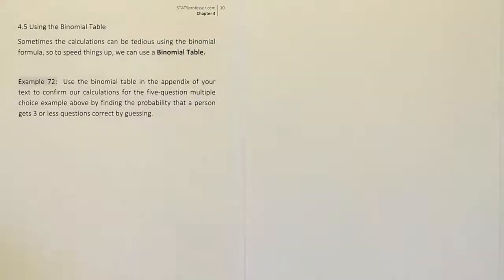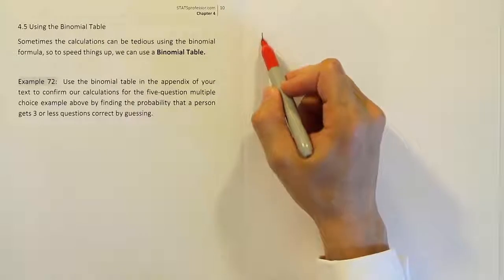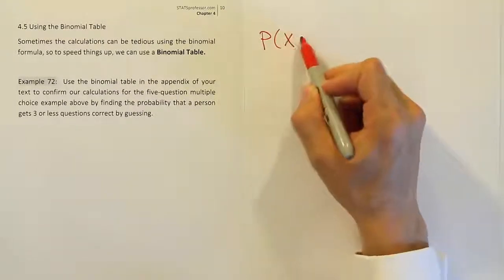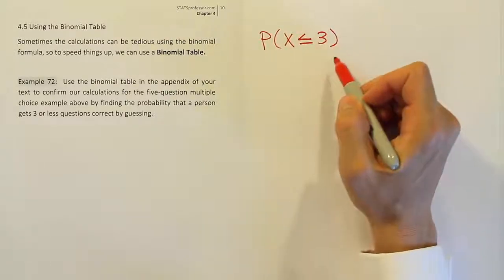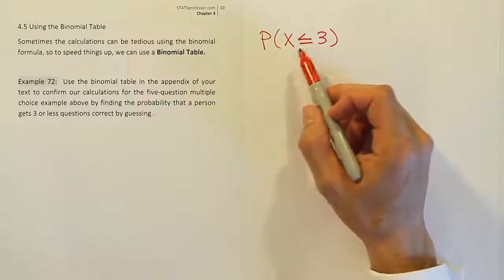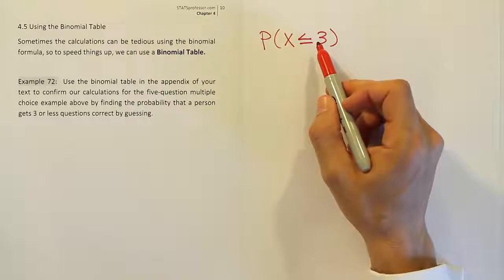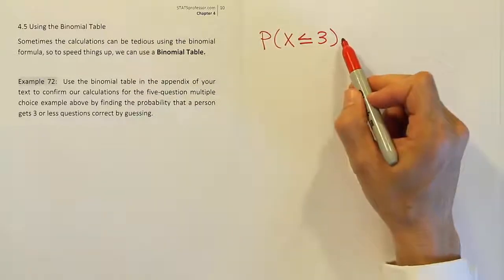Okay, so they want us to basically repeat part of the problem that we did before, but to answer a probability we did not cover in that table. In the table we did not look at the probability that x was less than or equal to three. We looked at the probability that it was equal to zero, equal to one, equal to two, equal to three all separately. We didn't look for cumulative probabilities like this. This is something different.